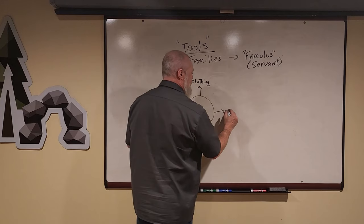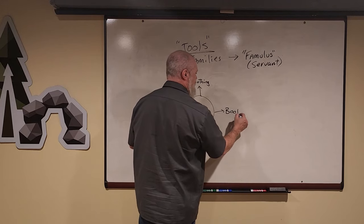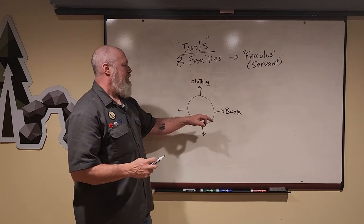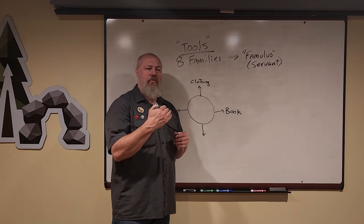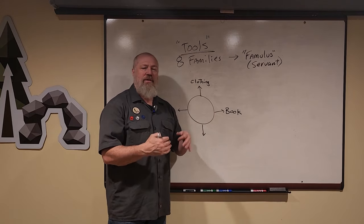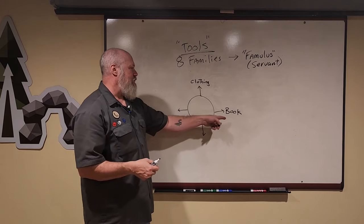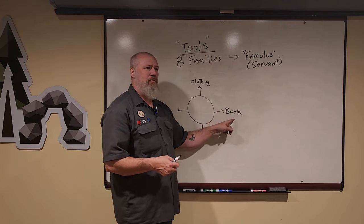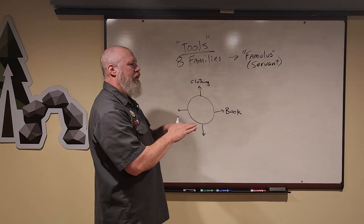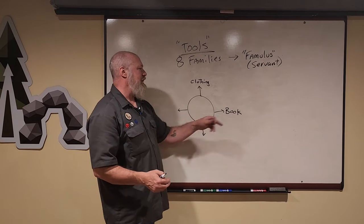So you have clothing. You have a book. We've explained about how a book is a way to record, transmit, disseminate information across time and space. So books are all communication devices, but we use the book as the archetype of the family of communications.